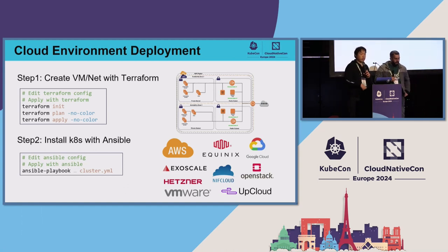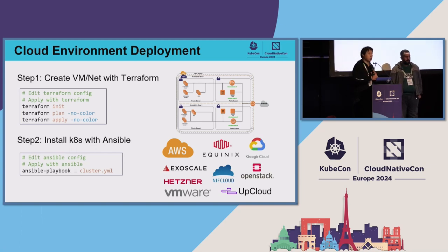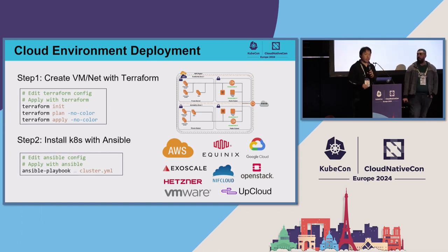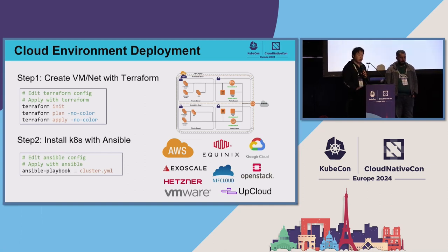KubeSpray can be used to deploy in the public cloud — it's a very good solution for bare-metal environments and also cloud environments. We can use Terraform to create virtual machines in the public cloud; there are many Terraform scripts in KubeSpray. Step one is to create VMs and networking with Terraform using 'terraform init' and 'terraform apply'. After the machines and network are set up in the public cloud, we install with KubeSpray using the Ansible playbook command. We currently support AWS and Google Cloud in KubeSpray.